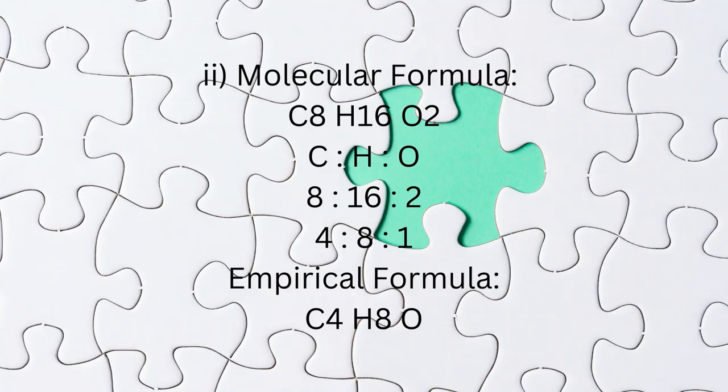Number two, molecular formula C8H16O2. Ratio C:H:O is 8:16:2. Simplest ratio is 4:8:1. Therefore, empirical formula is C4H8O.